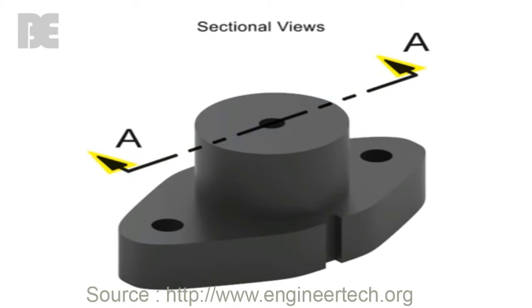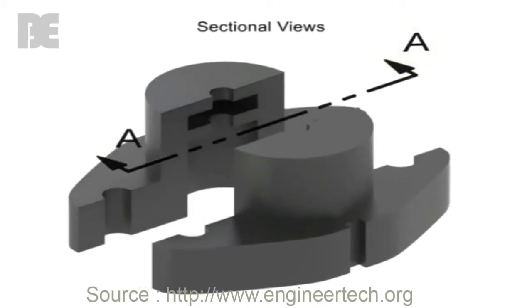The arrows on each end indicate the direction you view after the cut is made and are typically labeled with letters that identify the new view.